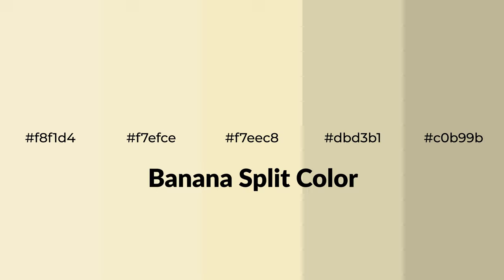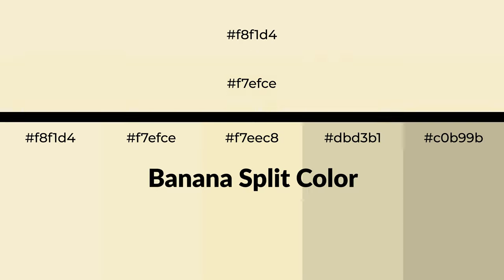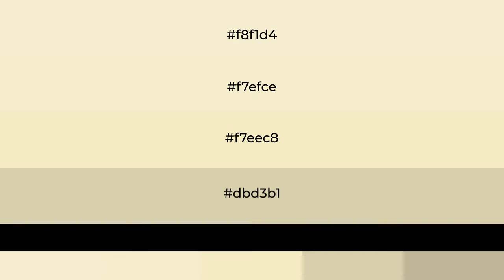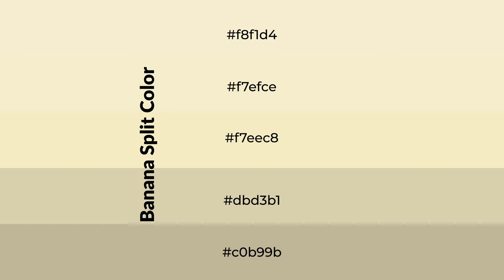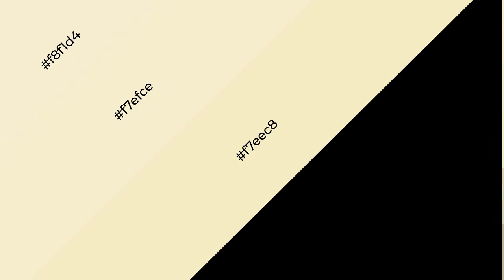Warm shades of banana split color with yellow hue for your next project. To generate tints of a color we add white to the color, and tints create light and exquisite emotions. To generate shades of a color we add black to the color, and it is used in patterns, 3D effects, and layers. Shades create depth and drama.